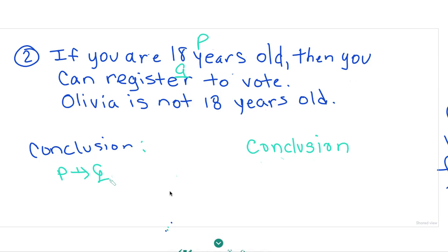Olivia is not 18 years old. So P is not true, so there is no valid conclusion. No valid conclusion.